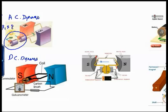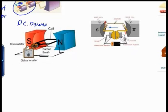Whereas in case of a DC dynamo, we have two rings called split rings S1 and S2 that touch the brushes B1 and B2 on either side.